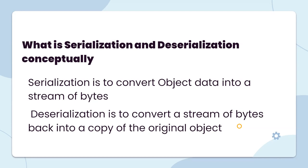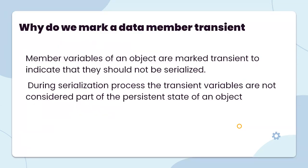Serialization is the process of converting an object to a byte array — a stream of bytes. Deserialization converts a stream of bytes back into a copy of the original object. Why do we mark a data member as transient? Member variables of an object are marked transient to indicate that they should not be serialized. During the serialization process, transient variables are not considered part of the persistent state of the object.